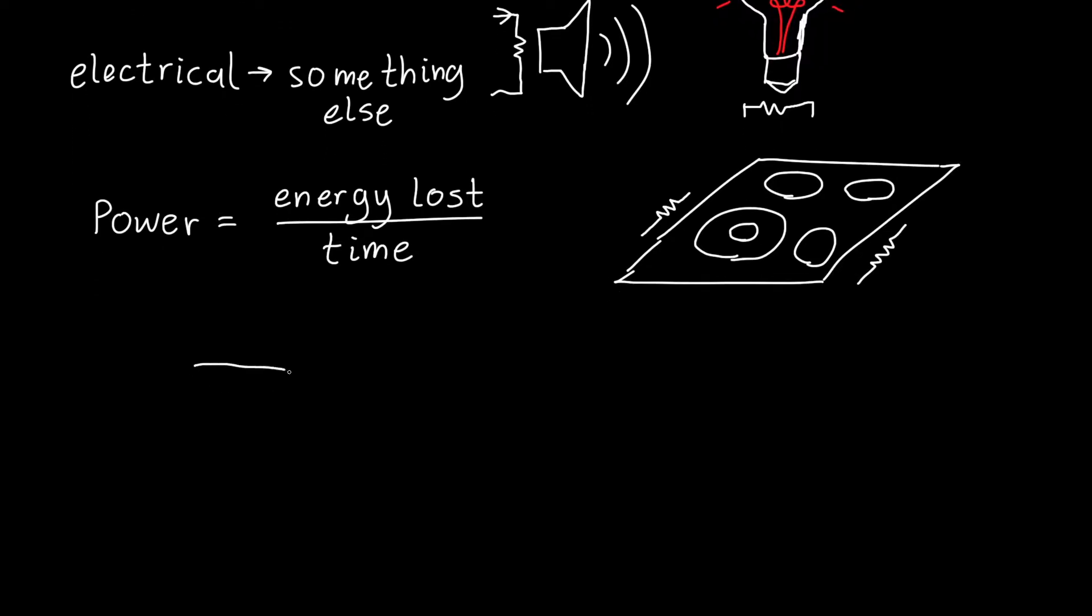So how do we find the energy lost in a resistor? Well, this will actually turn out to be the same for pretty much any circuit element. But let's say that we have a resistor, and it's got a certain amount of current flowing through it, I, and it's also got a certain voltage drop across it, V. And let's say that the resistance value is R.